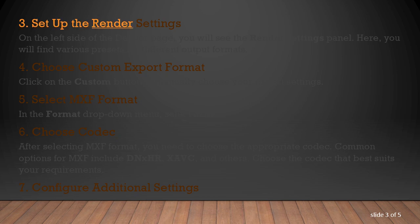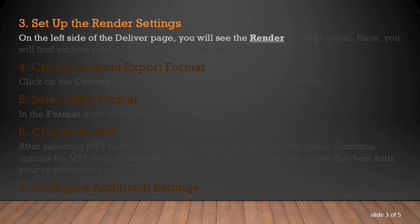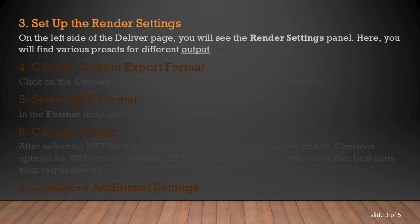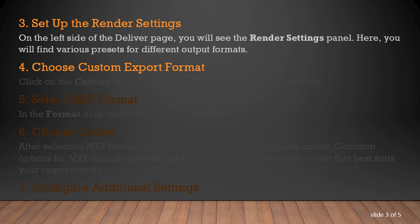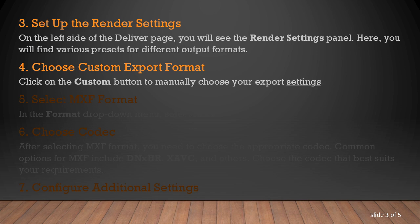Step 3: Set Up the Render Settings. On the left side of the Deliver page, you will see the Render Settings panel. Here, you will find various presets for different output formats. Step 4: Choose Custom Export Format. Click on the Custom button to manually choose your export settings.